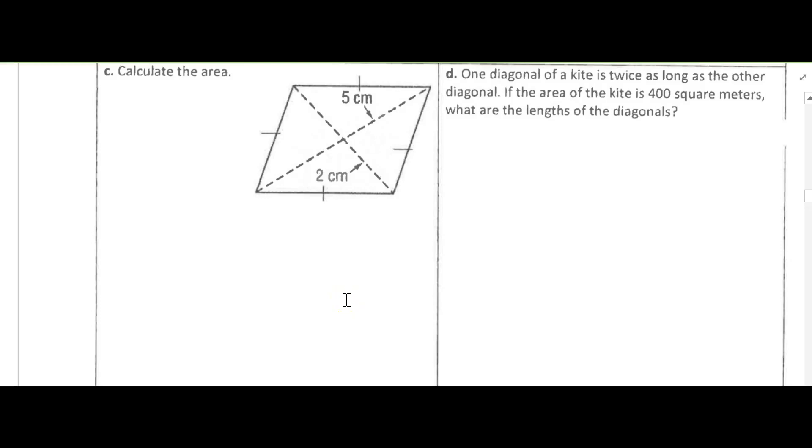In this video, we're continuing with Chapter 8, Section 8.1. We're looking at the area of kites in this example. We're going to do Example 1, Part D, and it says one diagonal of a kite is twice as long as the other diagonal. If the area of the kite is 400 square meters, what are the lengths of the diagonals?